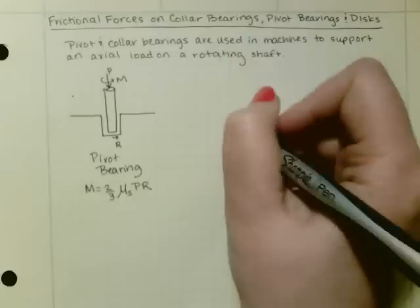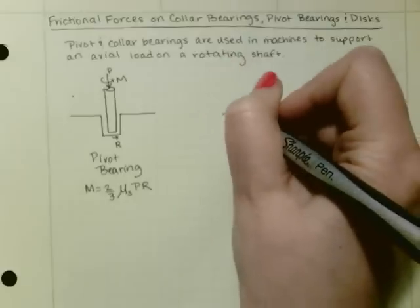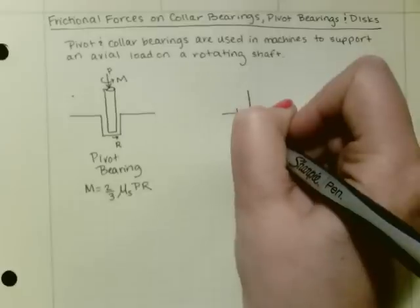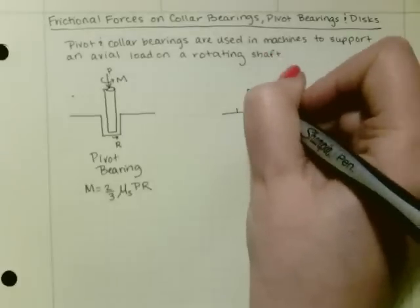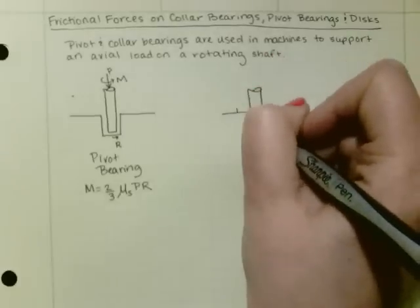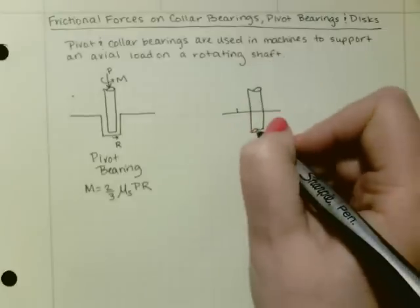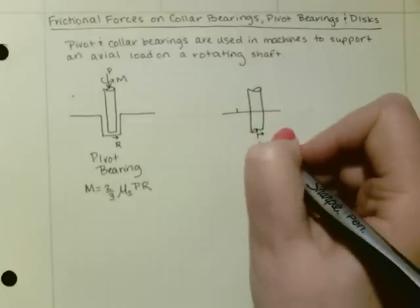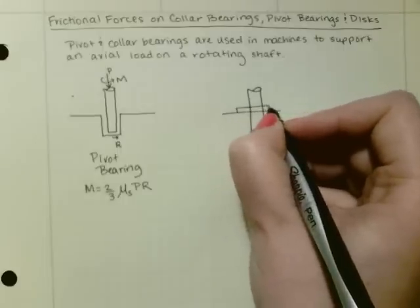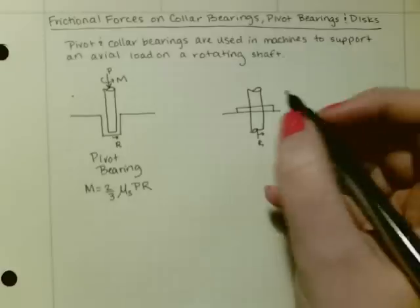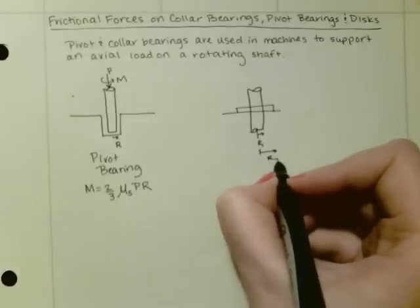And then we also have a collar bearing. Where we've got the shaft, we've got R1, and then we have a collar which has a radius of R2.